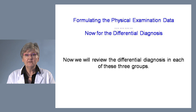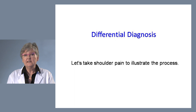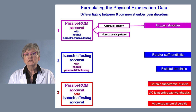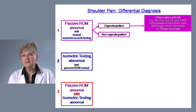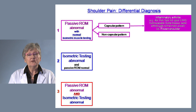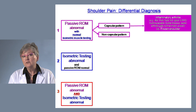Now we organize the differential diagnosis. Frozen shoulder shows a capsular restriction of motion with decreased passive range of motion. What else can give a capsular pattern? All the inflammatory arthritis syndromes — rheumatoid arthritis, psoriatic arthritis, spondyloarthritis, ankylosing spondylitis, gout, septic arthritis. In addition, osteoarthritis of the glenohumeral joint or a frozen shoulder will also give a capsular pattern.